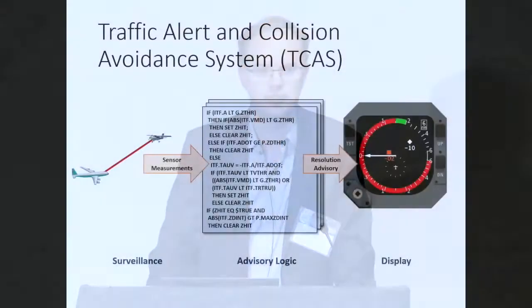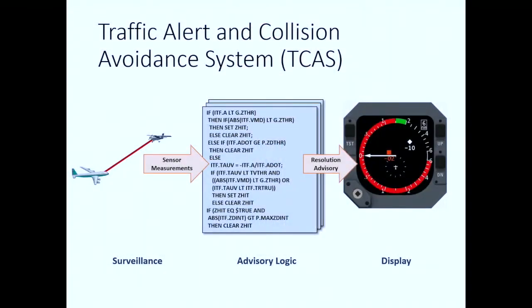So TCAS works like this. It has a surveillance system that detects and tracks intruders, and passes the sensor information over to some decision-making logic. Here's a little snippet of the actual code. This advisory logic determines whether to produce an advisory and what advisory to recommend to the pilots. And this gets passed on to the display. So any guesses as to how many pages of pseudocode are required to specify this logic?